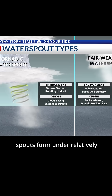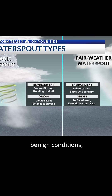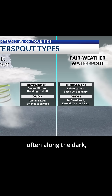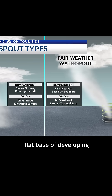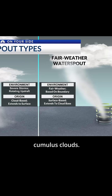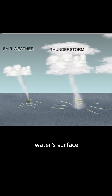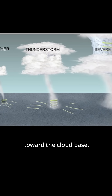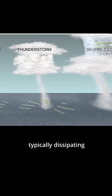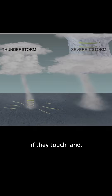Fairweather waterspouts form under relatively benign conditions, often along the dark, flat base of developing cumulus clouds. They start at the water's surface and climb skyward toward the cloud base, typically dissipating if they touch land.